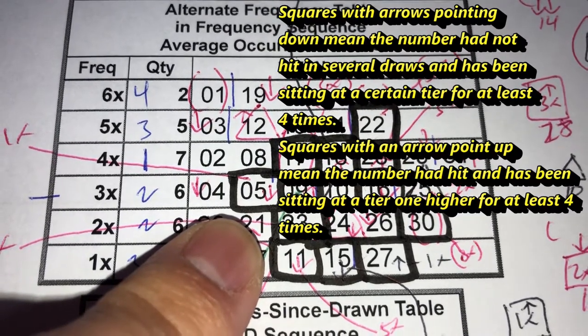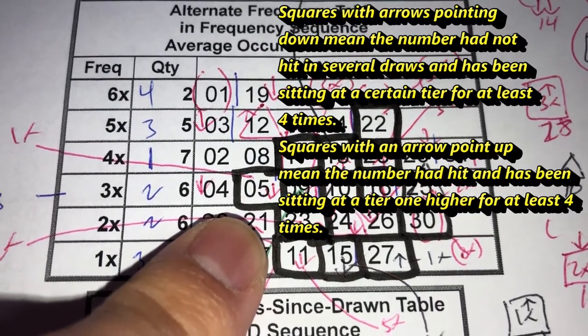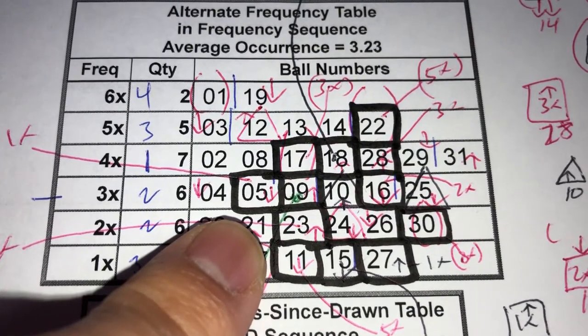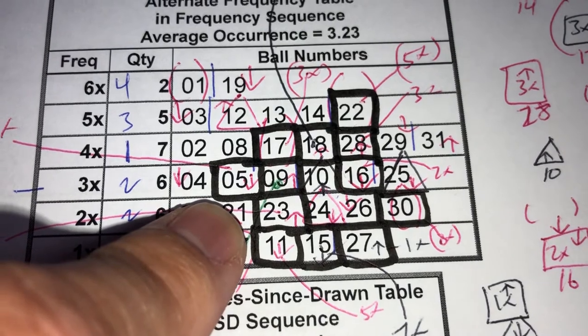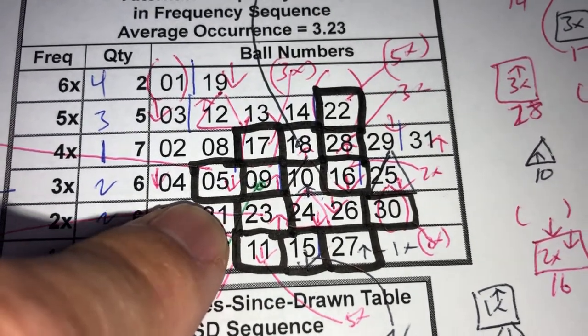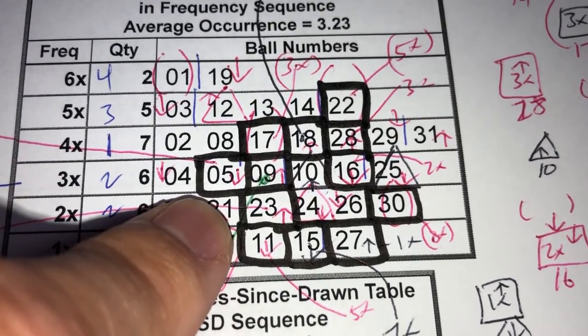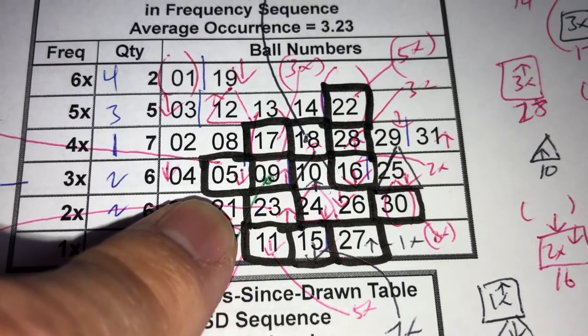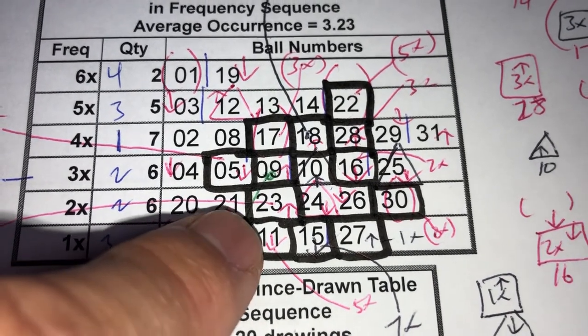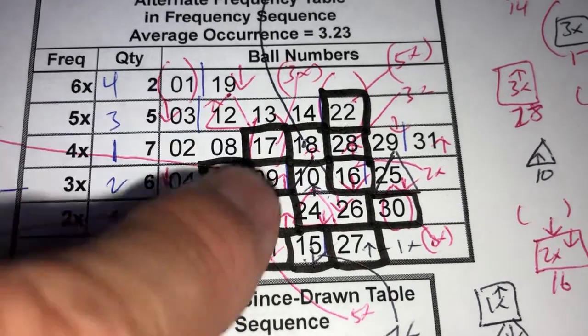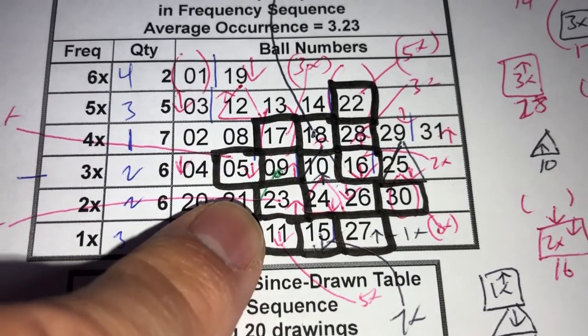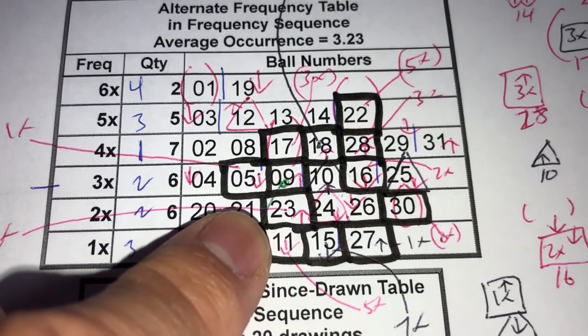There are arrows that indicate the direction. Squares with arrows pointing up mean that they have been hit previously and they're moving up the tiers. Squares with arrows pointing down mean that they haven't been hit in a while and they're sitting in a tier at least four times.